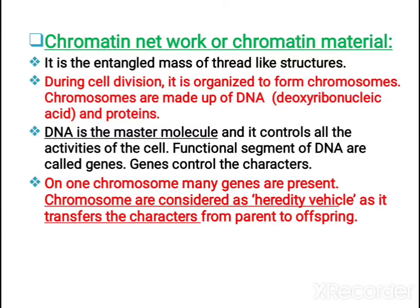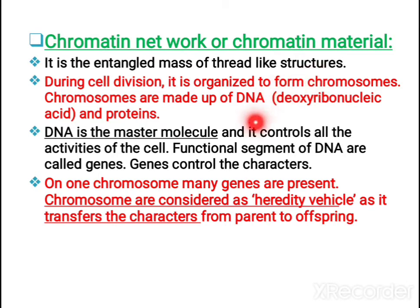Chromatin network or chromatin material can also be known as chromosomes. They are thread-like structures. During cell division, they get organized and become condensed to form chromosomes.